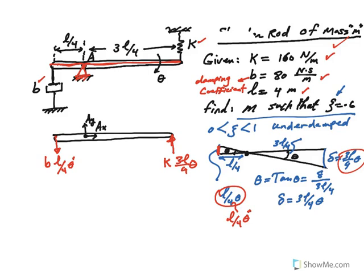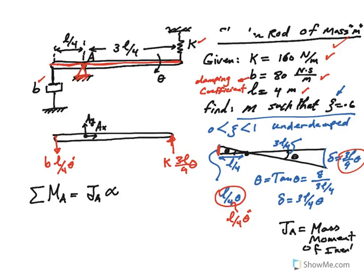So now if you go ahead and apply the equation of motion for a rotational system, the equation of motion is always torque or moment about the pivot point equal to moment of inertia. Typically, moment of inertia is denoted by I, but for system dynamics, because I is used for current, and if you're dealing with mechanical electrical system and the analogy, then we use J. Remember, J here is the mass moment of inertia.